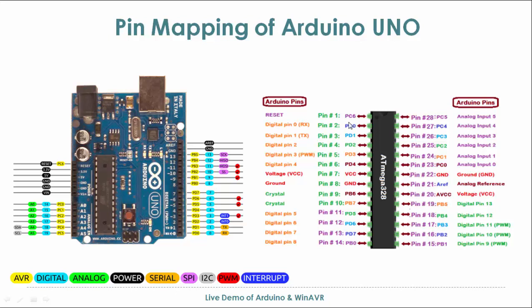The digital pins start from 0 to 13 on the Arduino side, which correspond to physical pin numbers 1 through 19 on the ATmega328P. The analog pins A0 to A5 correspond to physical pin numbers 23 through 28 on the actual controller. We need to keep this pin mapping image handy when programming the ATmega or the Uno using the WinAVR embedded C programming platform.